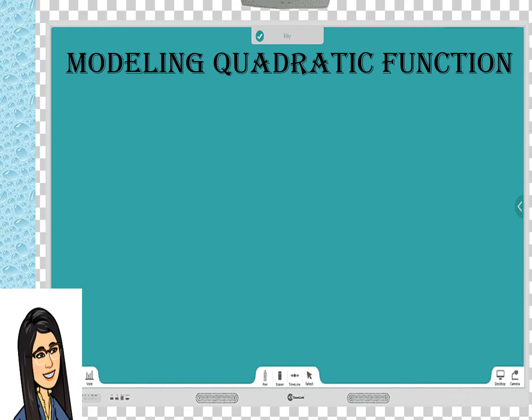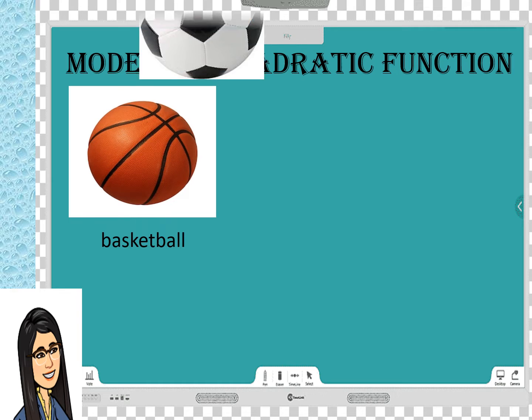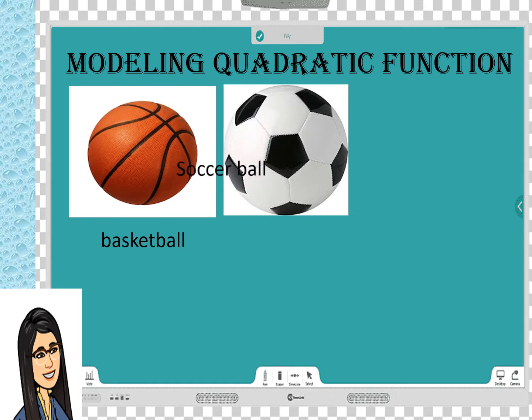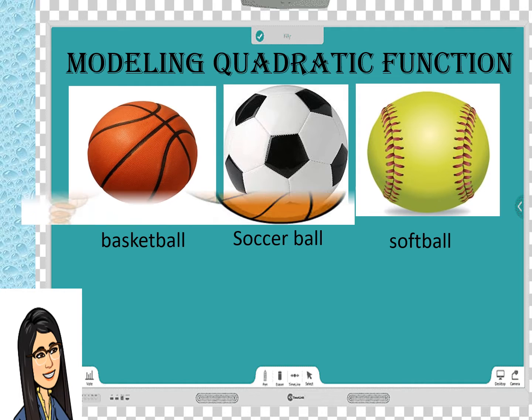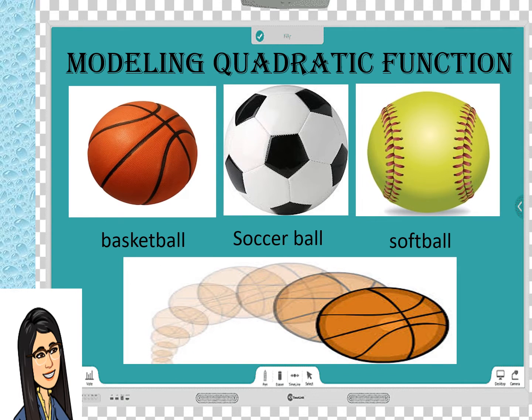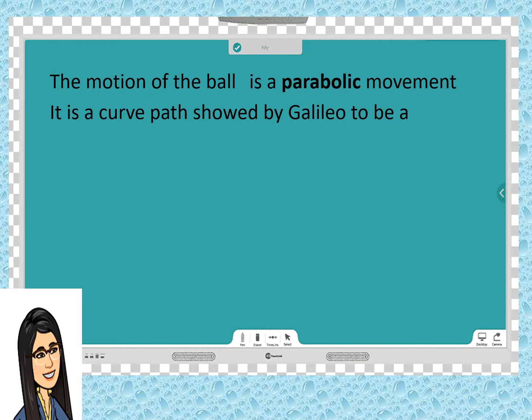Let us see how to model a quadratic function. This is a basketball. Can you imagine how these balls move while we are playing them? When shooting basketball to the ring? Or if the player kicked the soccer ball and the player hits the softball? The tendency of the ball moves in a projectile motion. Or, the motion of the ball is in a parabolic movement. That curved path was showed by Galileo to be a parabola.